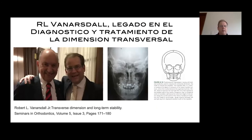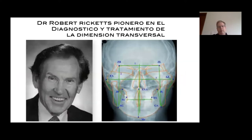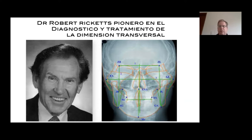It all starts with the idea of the transverse as the basis for sagittal and vertical correction. He always stressed that you need to set up the transverse first, and then you can correct the vertical and the sagittal. He was a big believer in the early work of Dr. Robert Ricketts. Ricketts was the first one to really take into account the transverse dimension. Before him, cephalometrics were only sagittal or AP. Ricketts was the first to take into account the maxillary width, mandibular width, and the norms for each age.